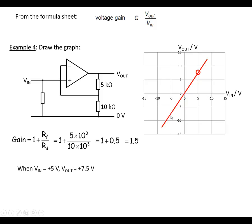And we get a line, a straight line through zero, through that point. And we've got to remember we've got a saturation of plus and minus 13 volts.